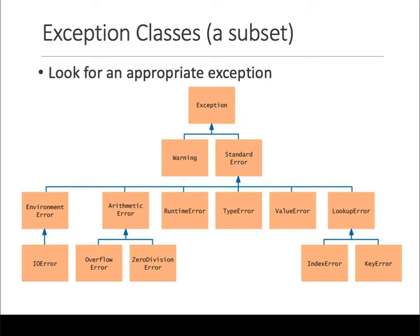In Python, exception handling is in a hierarchy. The topmost level is the Exception class—everything else are types of exceptions. Warning is a type of exception, standard error is a type of exception, and they are a little bit different. Your errors can be many things.